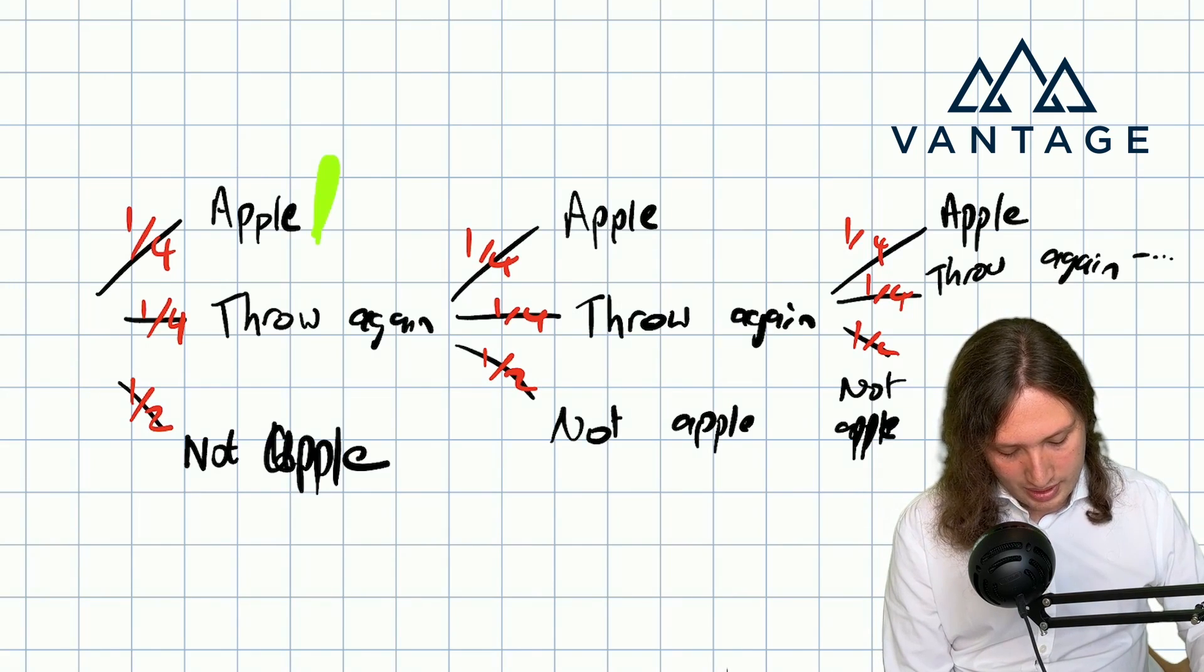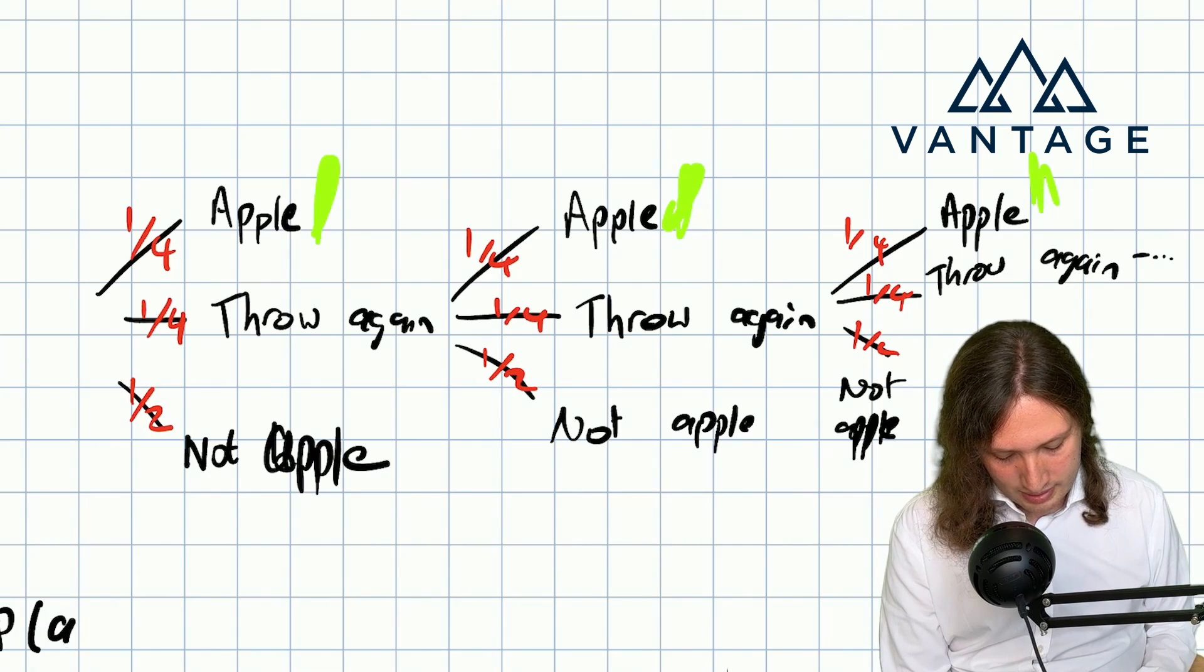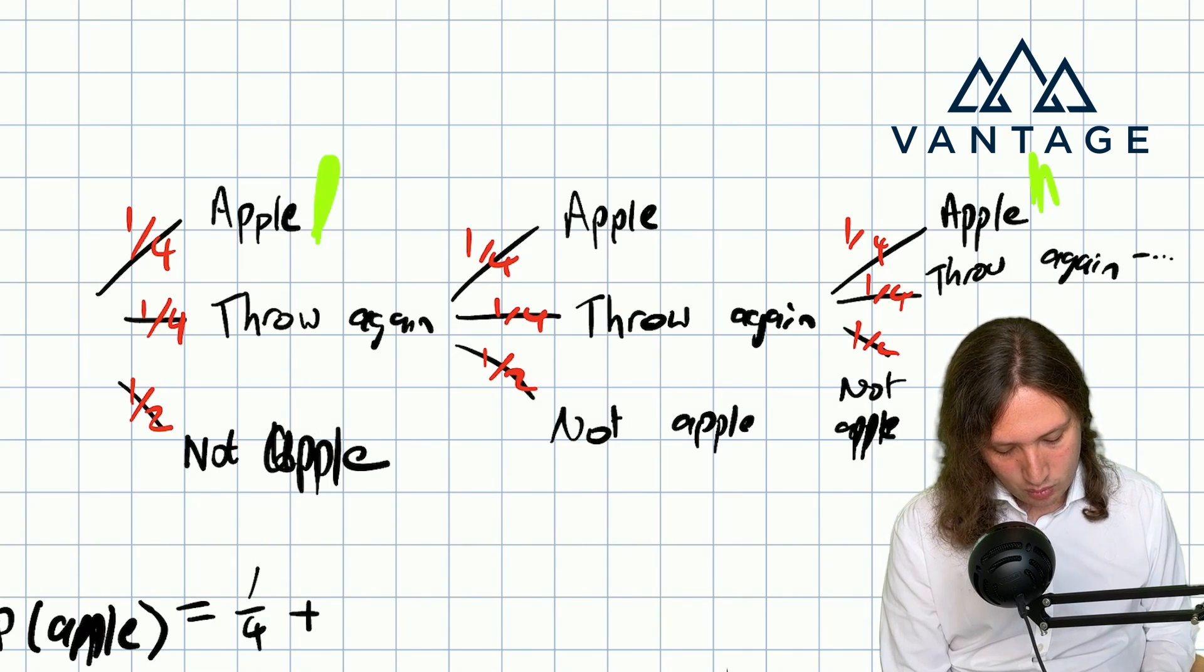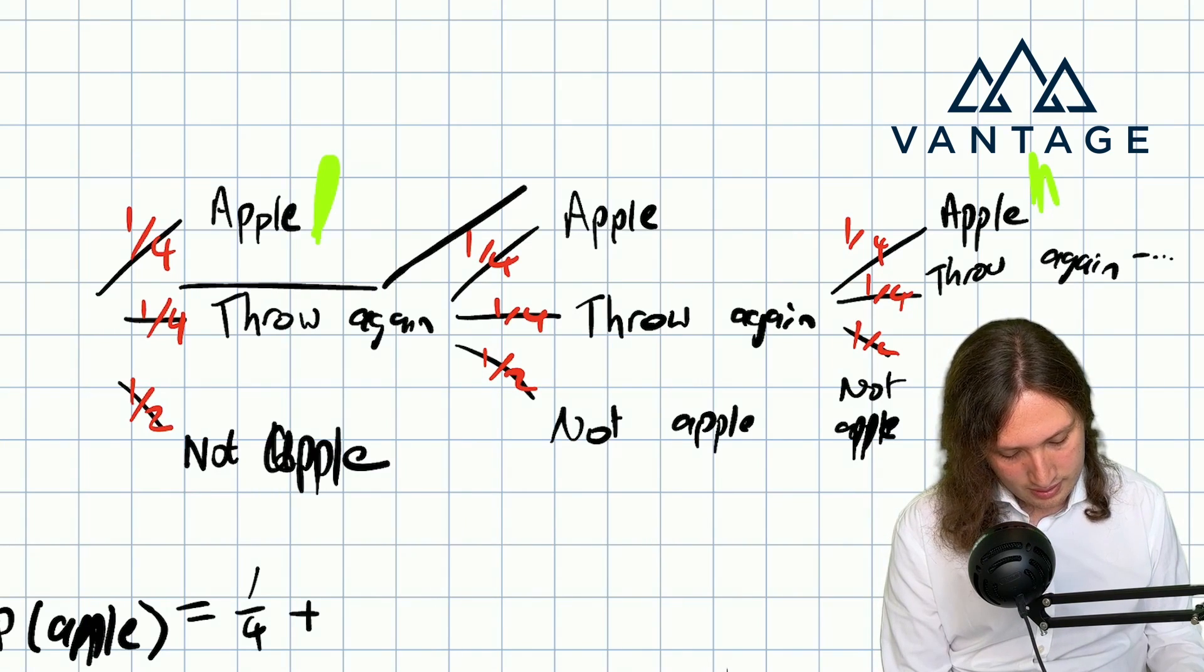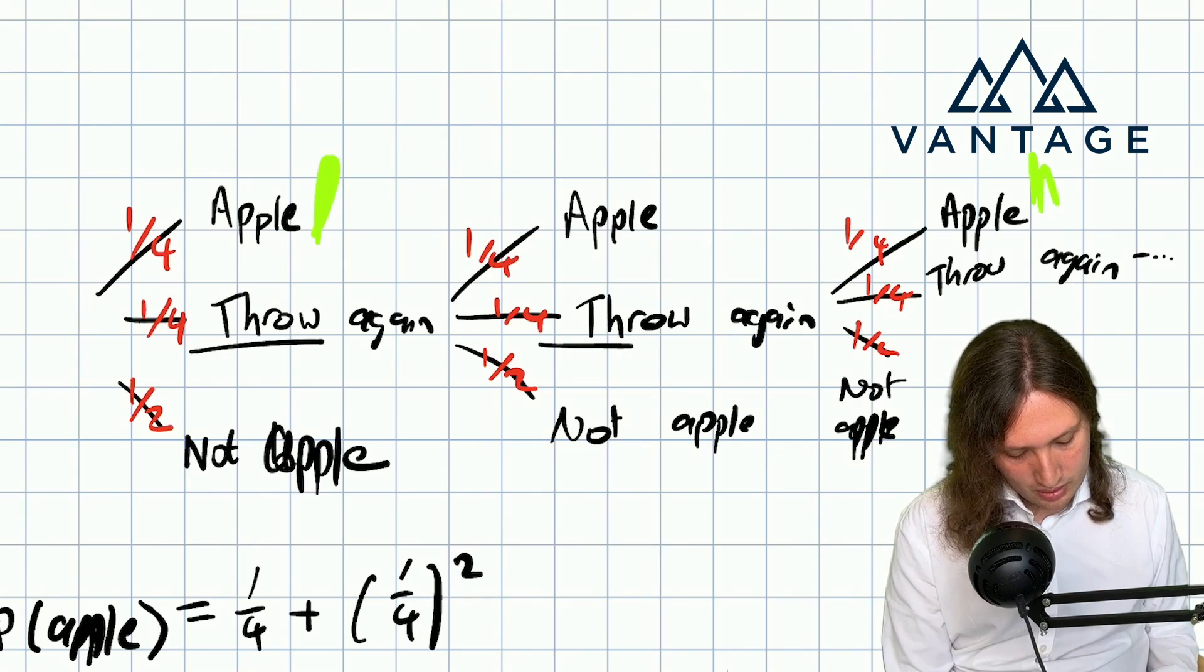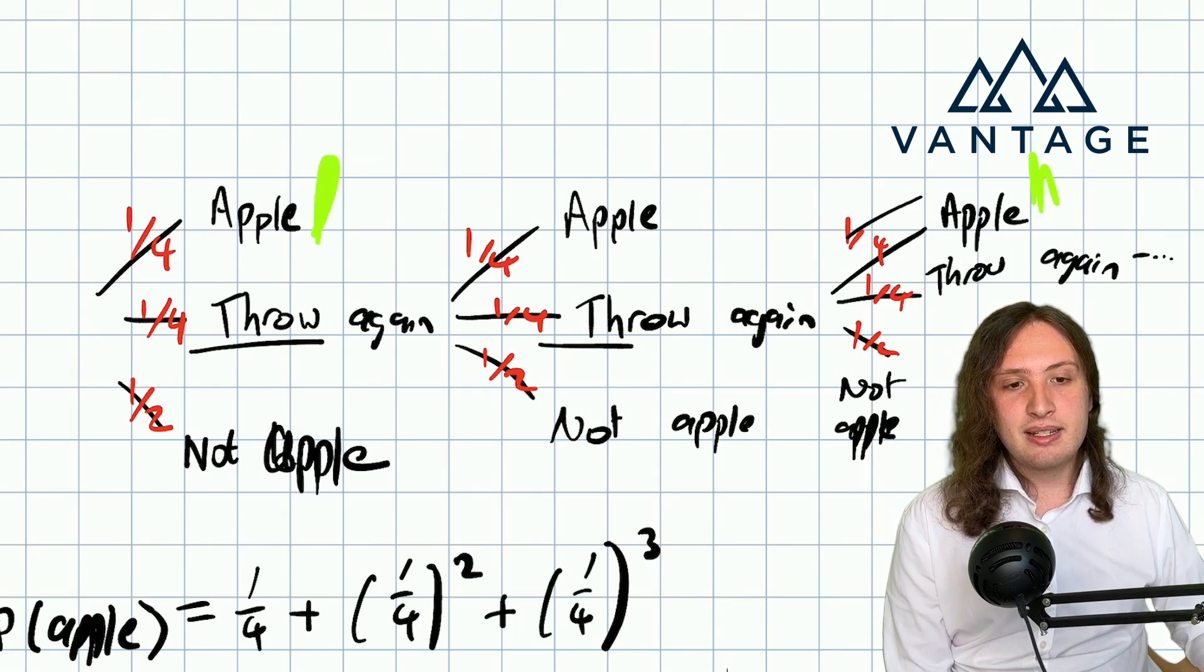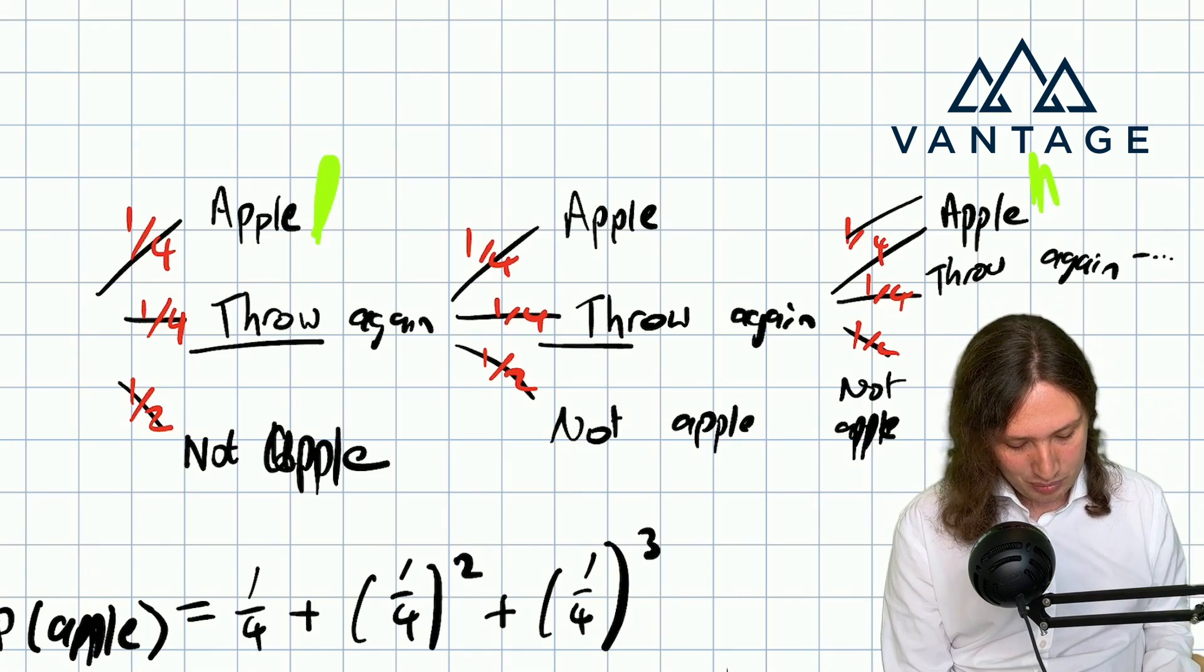So these are the good outcomes, apple, apple, apple, and so on. And what you can see is that the first good outcome happens with probability a quarter. The next one happens with probability a quarter squared, a quarter, a quarter. And then the next one after that, a quarter, a quarter, a quarter. And each one, each opportunity to eat the apple has an extra quarter associated to it because you have to have had one more throw again before you got your apple.